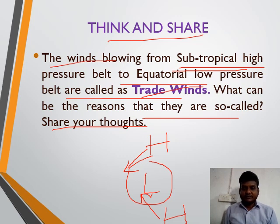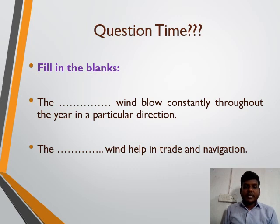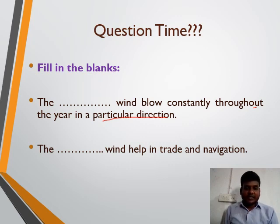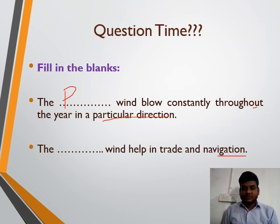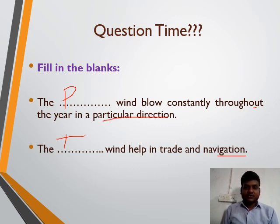Fill in the blank: the blank wind blows constantly throughout the year in a particular direction. Please write your answer in the chat box. The answer is permanent wind. Next question: the blank wind helps trade and navigation. Which type of wind helps trade and navigation? The answer is trade wind — trade wind helps navigation.